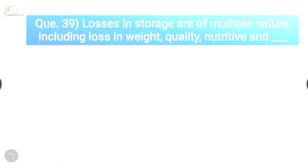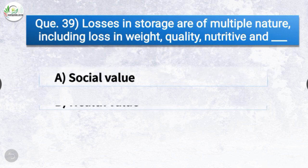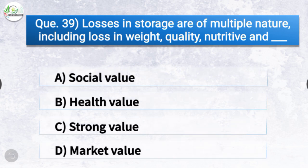Question number thirty-nine: Losses in storage are of multiple nature including loss in weight, quality, nutritive value, and dash. The options are social value, health value, strong value, or market value. The correct answer is option D, market value — losses in storage are of multiple nature including loss in weight, quality, nutritive, and market value.